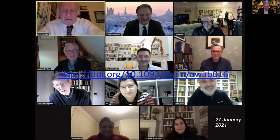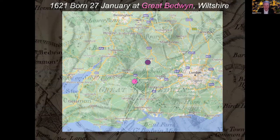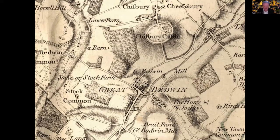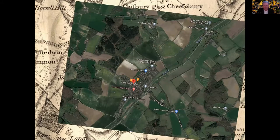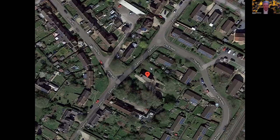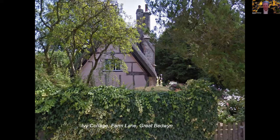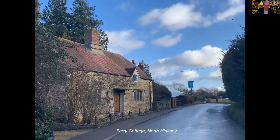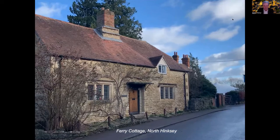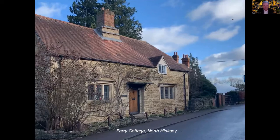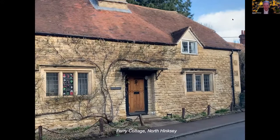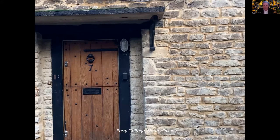Willis was born in Great Bedwyn, which is next to Marlborough in Wiltshire, and his father was running a farm here. The farms were owned by St. John's, my own college, so there is a link already between Oxford. If you look at this old map and then superimpose the Google map of Great Bedwyn, you see that this place didn't really change — you can still find Farm Lane, and from Farm Lane you have the house where Willis was born, Ivy Cottage. Willis is two years old when his mother Rachel is inheriting land in North Hinksey, which is about two miles from Oxford, and this is the house where they moved into.